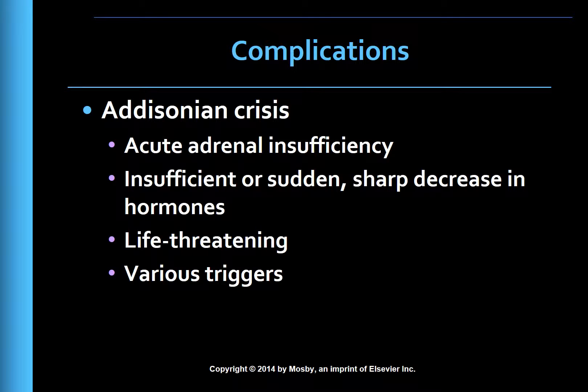Patients with adrenocortical insufficiency are at risk for acute adrenal insufficiency, or Addisonian crisis — a life-threatening emergency caused by insufficient adrenocortical hormones or a sudden sharp decrease in these hormones. Addisonian crisis is triggered by stress from infection, surgery, or psychological distress, sudden withdrawal of corticosteroid hormone therapy (often done by a patient who lacks knowledge of the importance of this therapy), adrenal surgery, or sudden pituitary gland destruction.